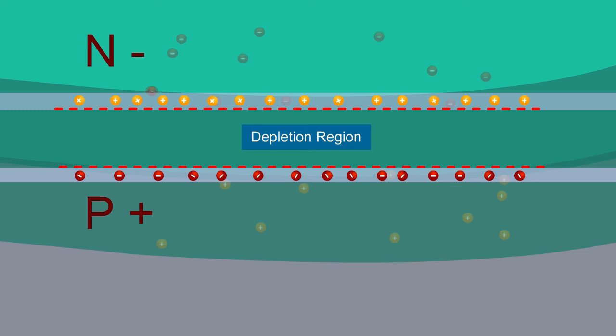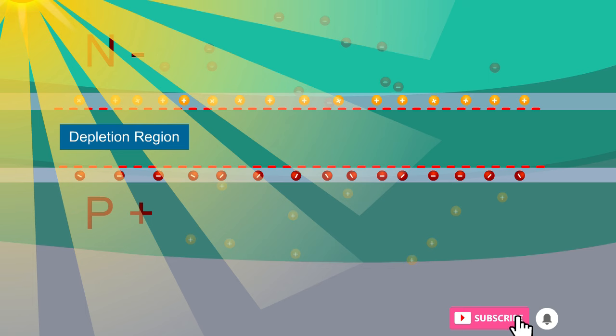Due to the deficiency of charge in the depletion region, it contains neutral atoms. These neutral atoms are broken when the photons from the sunlight strike the depletion layer.